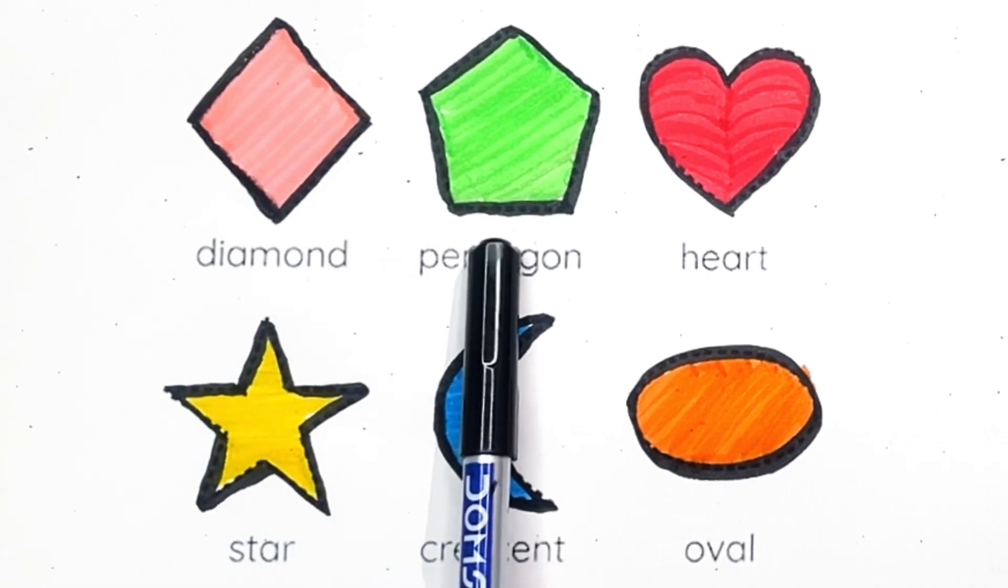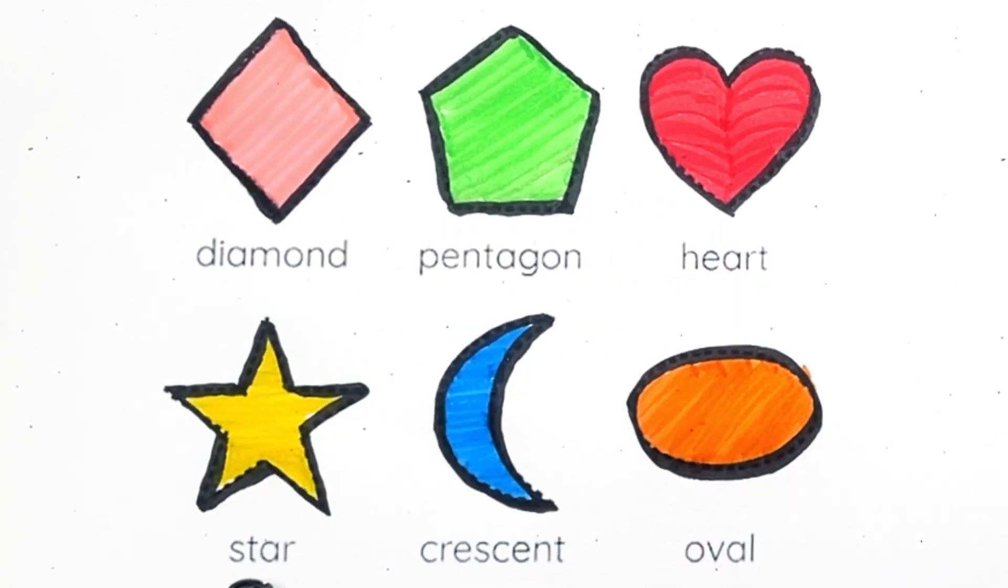Diamond. Pentagon. Heart. Star. Crescent. Oval.